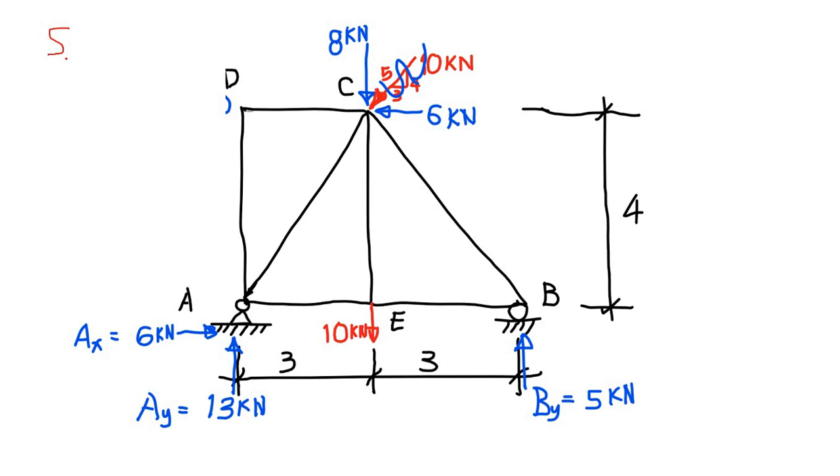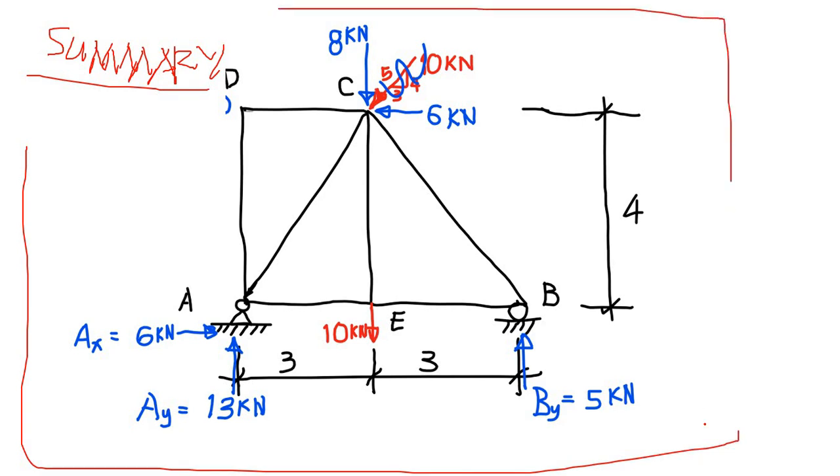We have now the summary of our reactions, so it would be easy for us such that we will be able to summarize our answer in a very simple manner. We will have these values here: AX is 6 kilonewtons. I hope you learned how to solve for reactions of a body in equilibrium. That's all, and thank you.